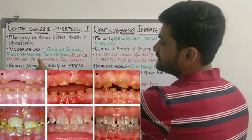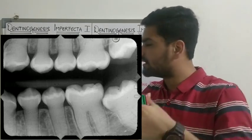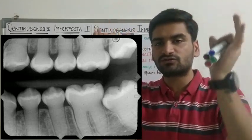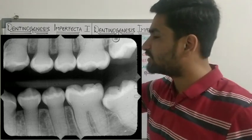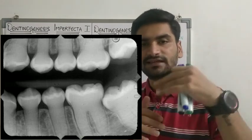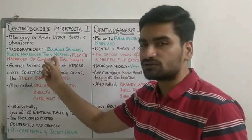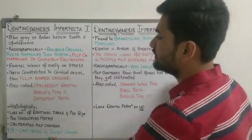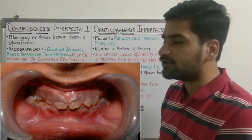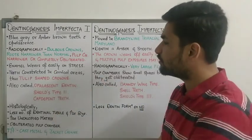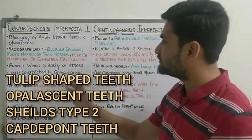Radiographic features: the teeth are going to appear bulbous because there is constriction in the cervical area - when the cervical area is constricted, the crown automatically appears bulbous. Roots are narrower than normal. The pulp chamber is also narrower; sometimes it can be completely obliterated and you can't see the whole chamber. The enamel over the dentin is going to be so soft or friable that it will wear off easily due to stress, and dentin will be exposed. In some cases, dentin will also wear off. Due to constriction in the cervical area, the crown is going to appear tulip-shaped.